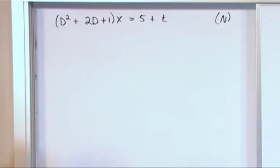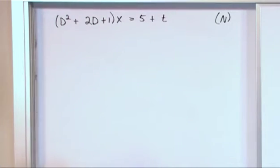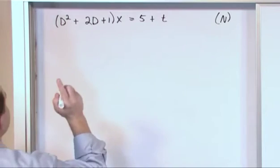Alright? Now the first thing we do, we talked about this in the last section, the very first thing we do is we take away what's on the right hand side of the equal sign, make it homogeneous and find the homogeneous solution because that's going to be a big part of the final answer. So let's do that.